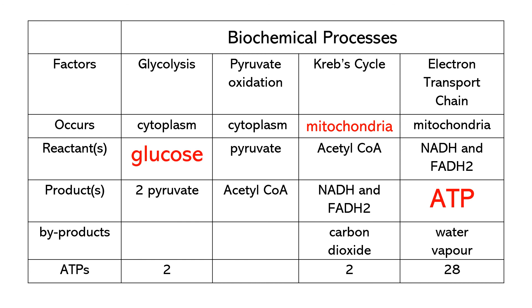We need to count the number of ATPs produced in each biochemical process. For glycolysis, it's two ATP. In the Krebs cycle, two ATP. And in the electron transport chain, 28 ATP.